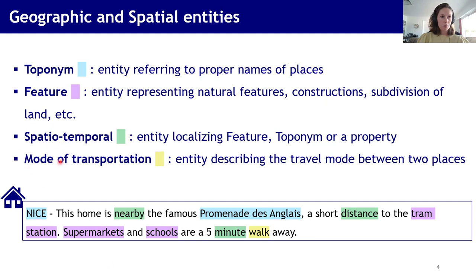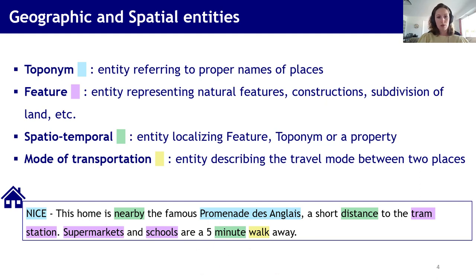We also have two other types of entities: spatio-temporal and mode of transportation. Spatio-temporal is a distance, and it can be spatial, like 5 kilometers or 100 meters. It can be temporal, like 5 minutes, or a vague distance like nearby or short distance — we don't know exactly what it means. The mode of transportation helps to reduce the vagueness of the spatio-temporal entity. For example, we have walk that completes 5 minutes, so we know that 5 minutes is by walking and not, for example, by driving.